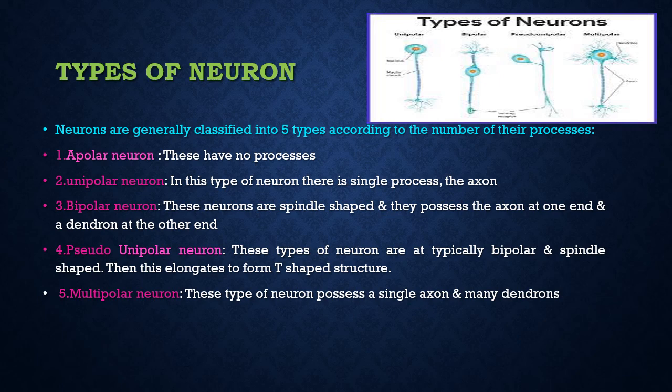Second type is unipolar neuron. Uni means single — it contains a single process, that is, Axon. Third one is bipolar neuron. These neurons are spindle shape — it has Axon at one end and Dendron at another end. The next type is pseudo-unipolar neuron. In case of initial stage, it will be bipolar and spindle form, and later it will elongate, divide, and be converted to a T-shaped structure.